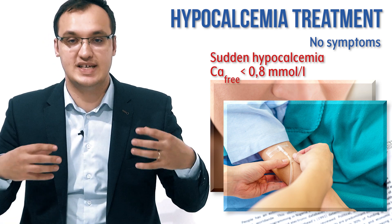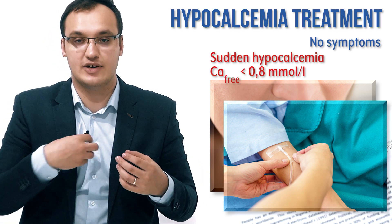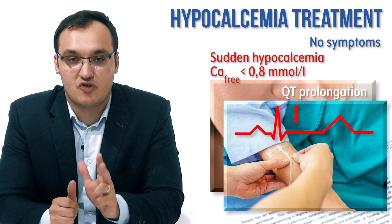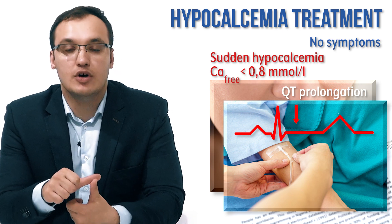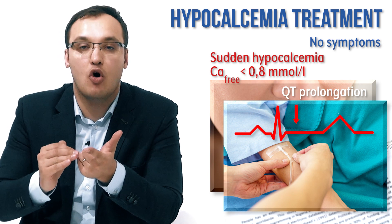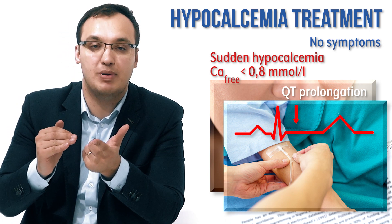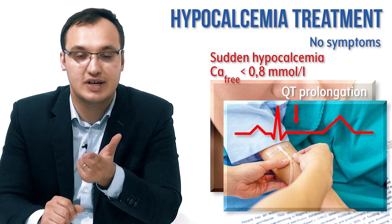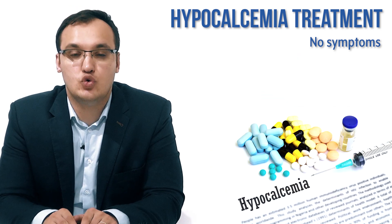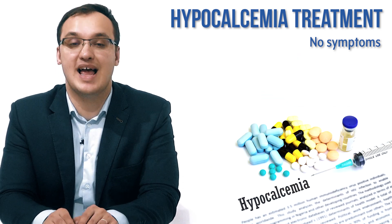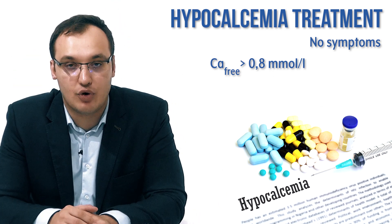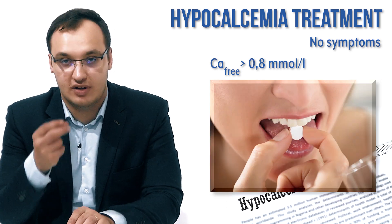Also, those patients where we see on the ECG a QT prolongation will receive intravenous treatment. So these three types of patients get IV: those with symptoms, those with no symptoms but an acute drop below 0.8 millimole per liter of free ionized calcium, and those who have a QT prolongation. Patients without symptoms and without a sudden decrease — meaning more than 0.8 mmol/L — will be treated orally.